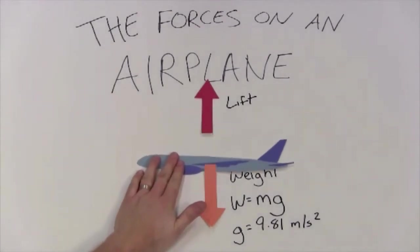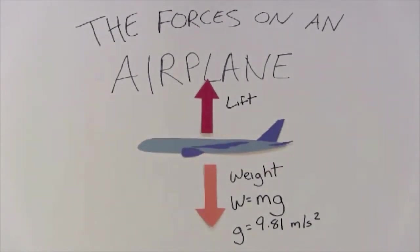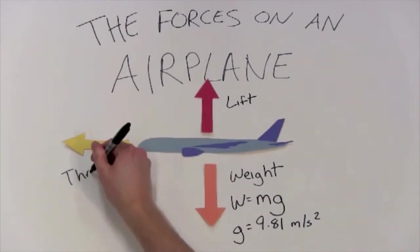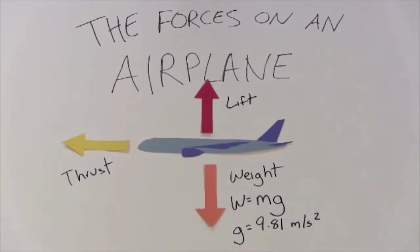Now if these are the only two forces, our aircraft will be able to go up and down but it won't go anywhere. So we have to have a force that pushes the airplane forward and this is called thrust. All vehicles have thrust, otherwise they wouldn't go anywhere.